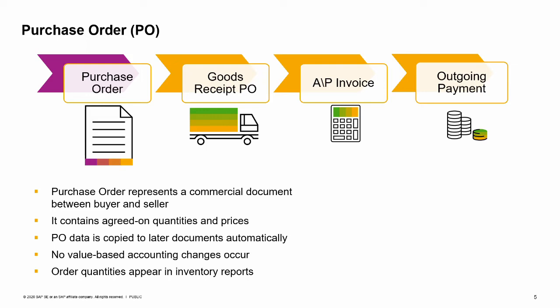When a purchase order is added in SAP Business One, no value-based accounting changes occur. However, the order quantities are listed in inventory management. You can view items and quantities on order in various reports and windows, such as the inventory status report and the item master data window. Having such real-time access to this information can play a key role in optimizing a company's purchasing and inventory management business processes.